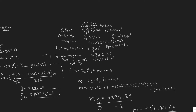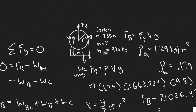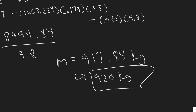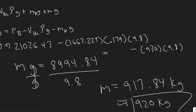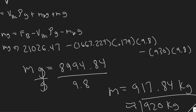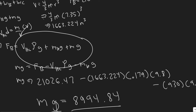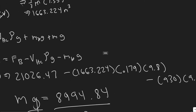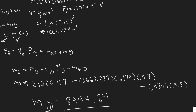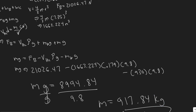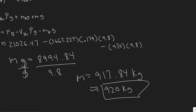They want us to find how large a cargo can be lifted. We know the buoyancy force is 21,026.47 N, and with that, the maximum cargo mass is about 920 kilograms. If the mass were greater than this value, it would exceed FB and the balloon wouldn't rise. So by setting forces equal to each other, we find the maximum value of m at which it will still rise.